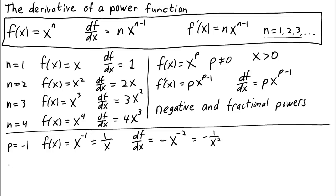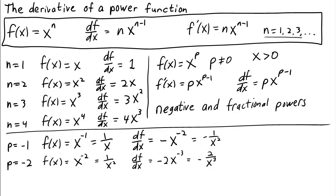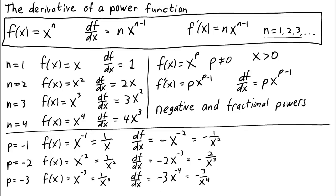We can continue to other negative exponents. For x to the power of −2, the derivative is −2·x^(−3) — we subtract 1 from the exponent, so our new exponent is −3. Similarly, for x to the power of −3, we get −3·x^(−4).